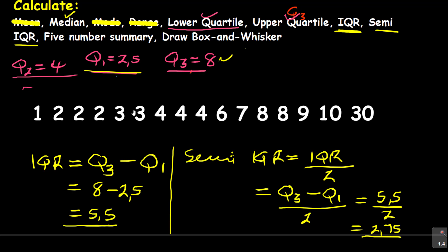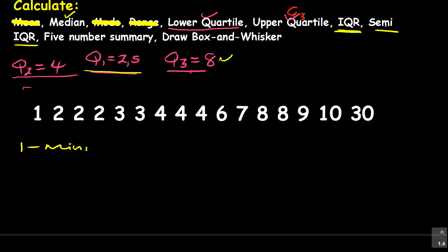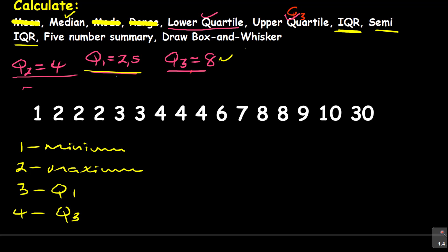So when you have done this, we are now able to do the final part: the 5-number summary. What is the 5-number summary made up of? Number 1: the minimum. Number 2: the maximum. Number 3: Q1. Number 4: Q3. Number 5: the median — M or Q2.